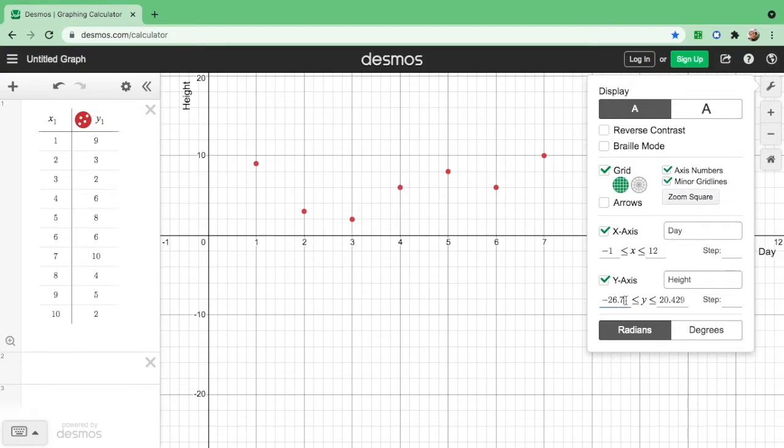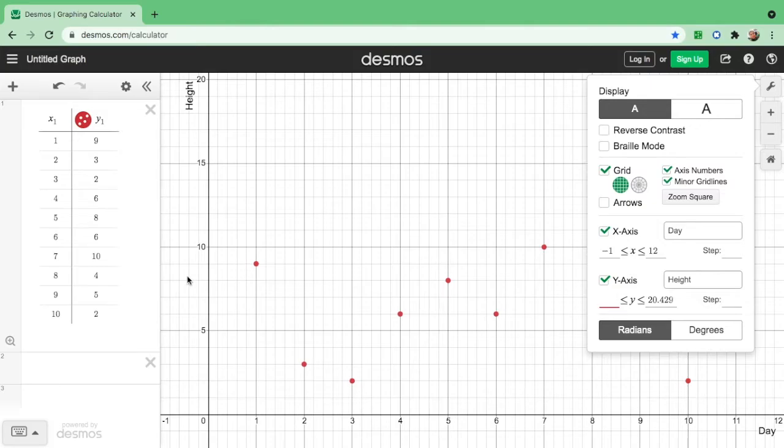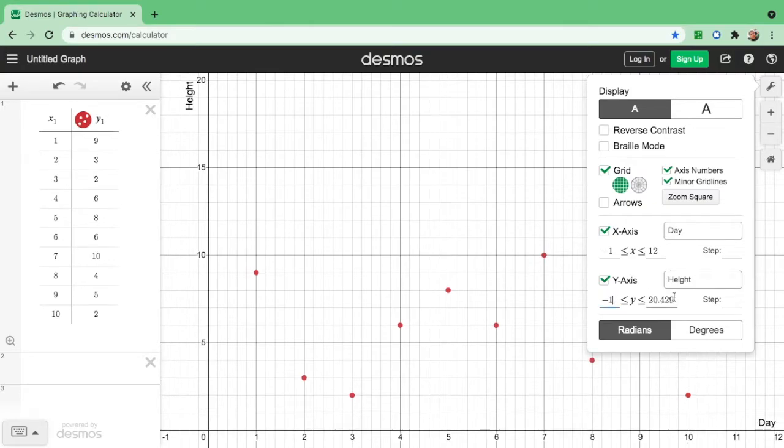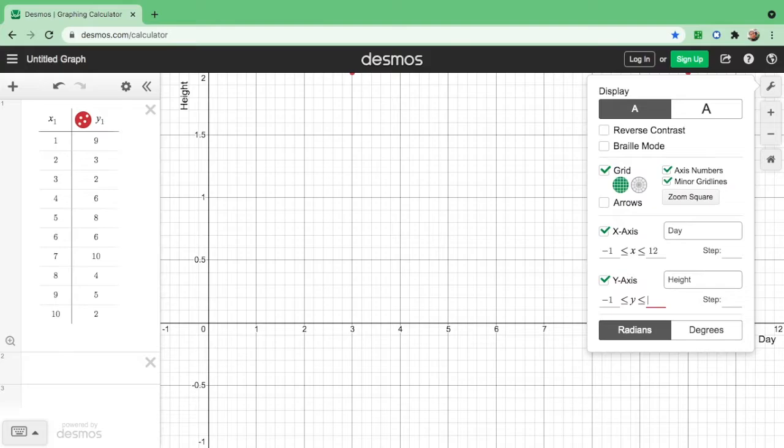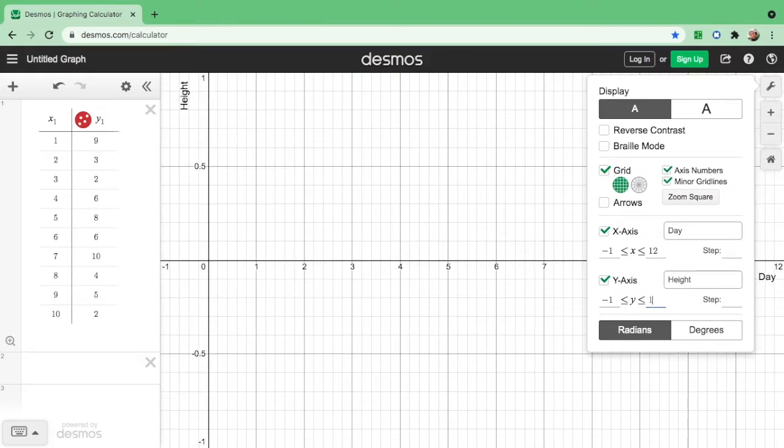And on the y-axis, since the value starts at, the lowest value starts at 2, so we can actually start at negative 1 as well. And ends, the highest number for the y-axis is 10. So if you want to make it 12, that's up to you.